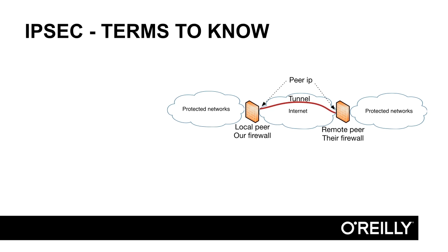There are a lot of terms and definitions to know and understand when it comes to IPsec VPN, and I will try to explain the most common terms. First of all, when we talk about peers, we're talking about a firewall or security device that terminates a VPN tunnel. In the topology drawing on the screen, there is a red line between two firewalls representing the VPN tunnel, and the VPN tunnel always terminates in two different VPN peers. So a peer is a device that terminates a VPN tunnel, and in order to build a VPN tunnel, we need two different peers.